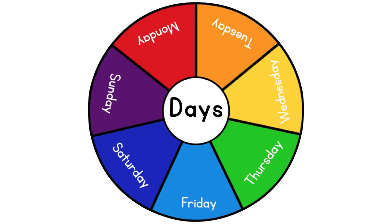Moving on to days — we have 7 days in a week. The same rule applies: the first letter should be in capital letter. Huruf pertama mesti dalam huruf besar. So we have Sunday, Monday, Tuesday, Wednesday, Thursday, Friday, Saturday.